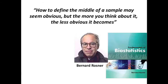Similarly, Bernard Rosner, a famous author of Fundamentals of Biostatistics, said: how to define the middle of a sample may seem obvious, but the more you think about it, the less obvious it becomes. It means when we start knowing about Measures of Central Tendency it seems quite easy, but the more we know about it, there is more scope for learning.